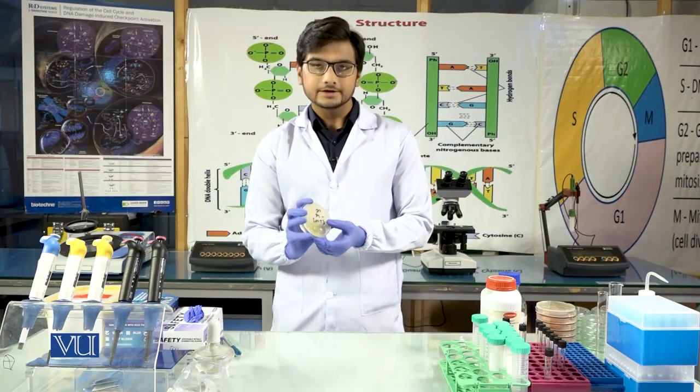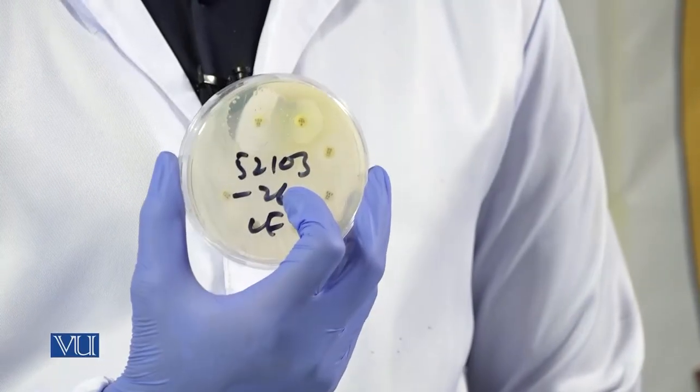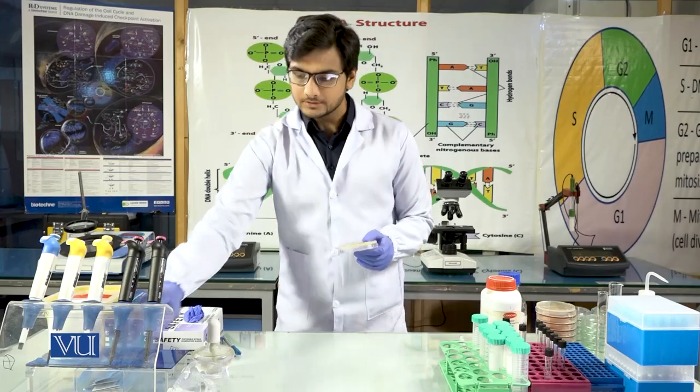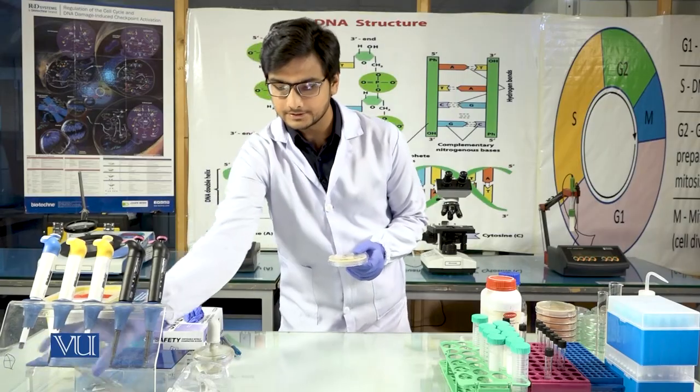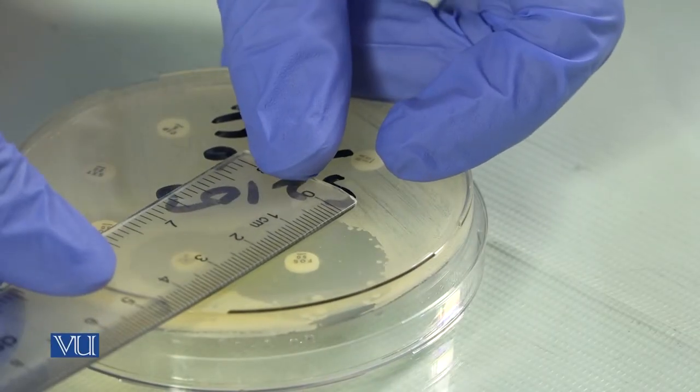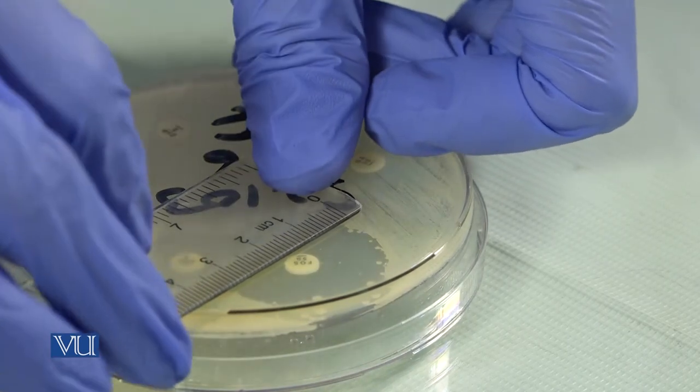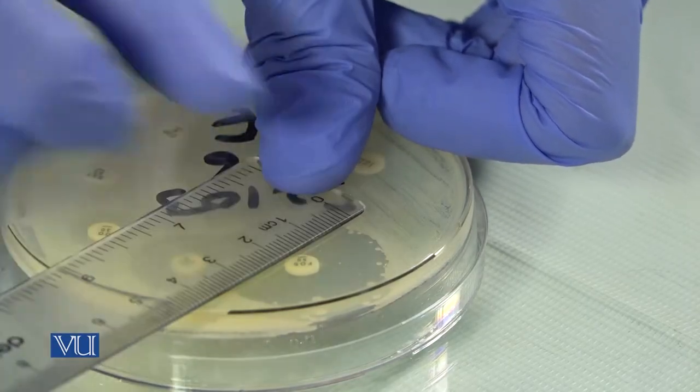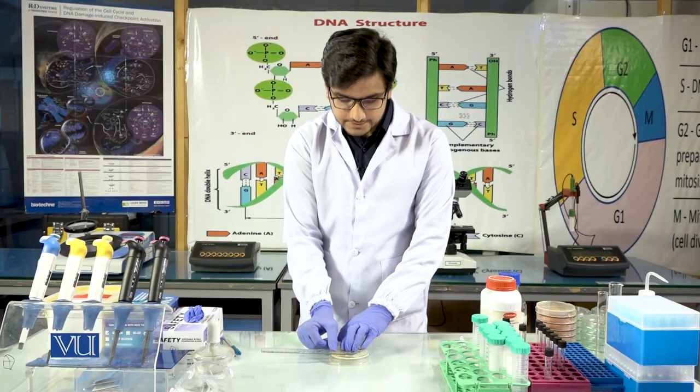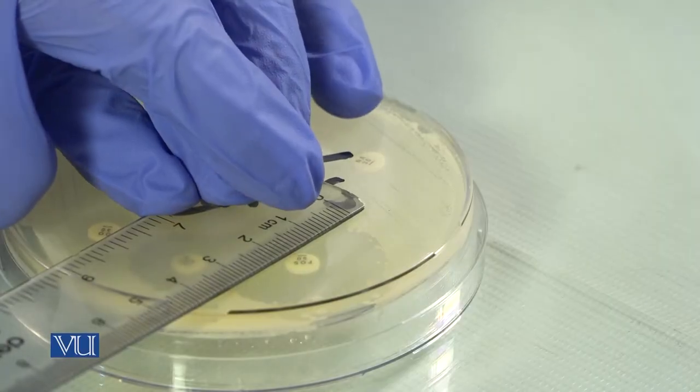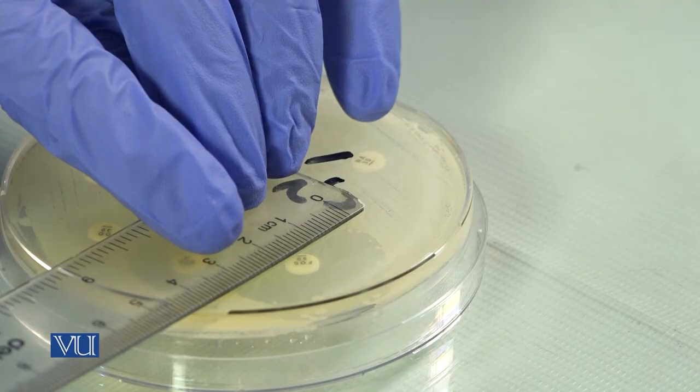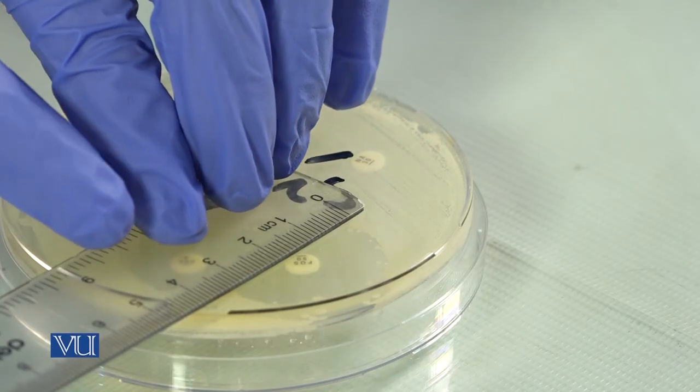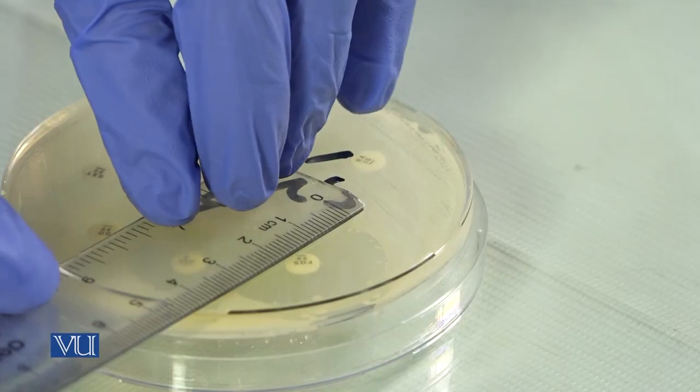We have a plate after 16 to 18 hours of incubation. We will remove the plate from the incubator and then we will take the scale. We will keep the scale like this - the antibiotic disc is in the middle of the scale and we will measure the zone. As we know that there are 10 millimeters in a centimeter, so if we have a total of one to three centimeter zone of inhibition, we will consider it as 30 millimeters zone of inhibition.